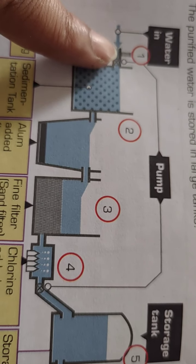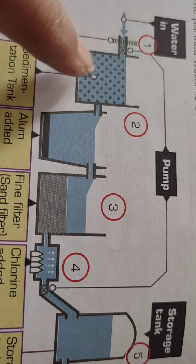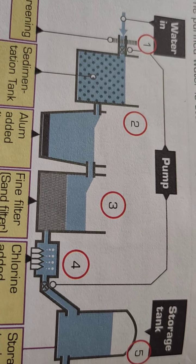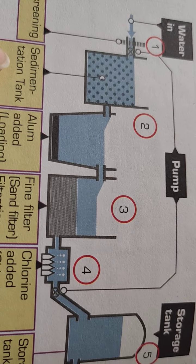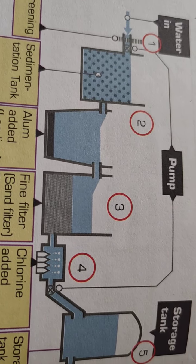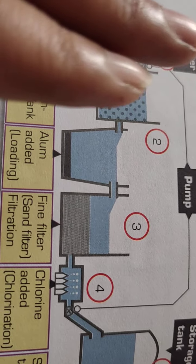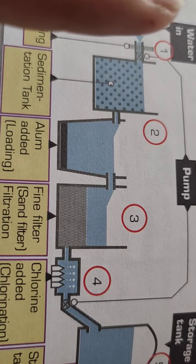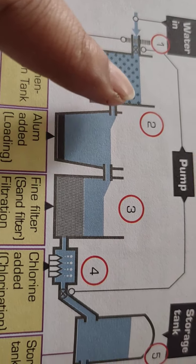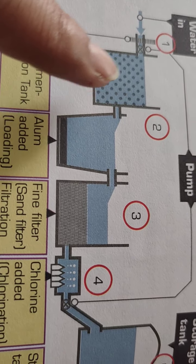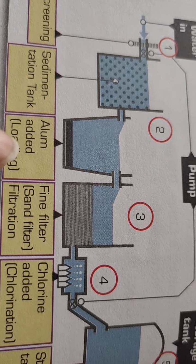Then the water, after the removal of these bigger impurities, is allowed to pass through the sedimentation tank. In sedimentation, the bigger impurities are allowed to settle down. The water stands still and the impurities settle. Then the clean water is passed through the loading tank.